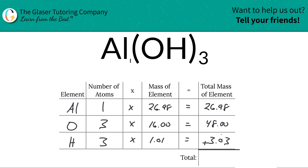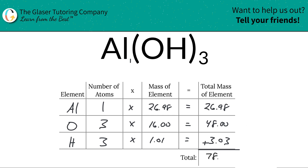To find the total mass of the entire compound, we simply add this column up. When we do that, we get a value of 78.01. Since we're finding molar mass, the units are grams per mole.